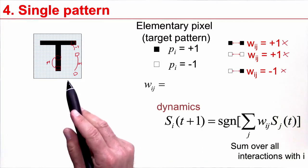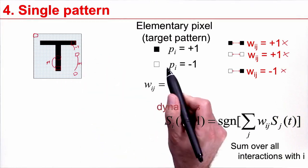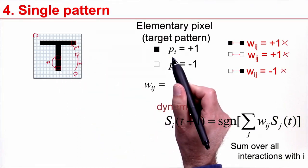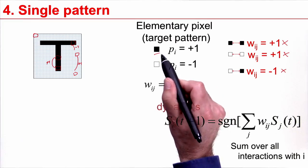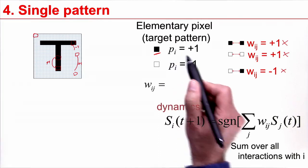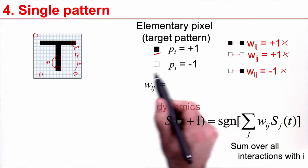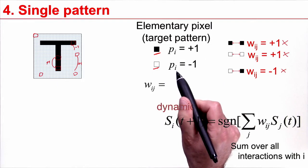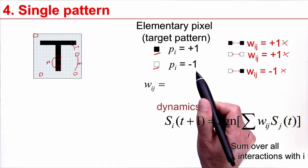What is a prototype pattern? A prototype pattern has for each location i a certain pixel value. Let me introduce the notation that if the pixel is black, then at location i I have a variable pi which has a value of plus one. If the pixel is white, then at location i I have a value of minus one.